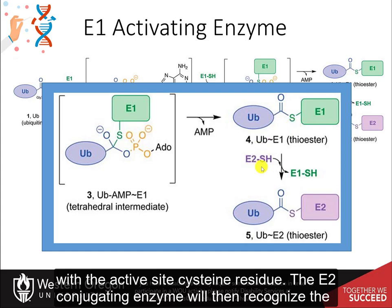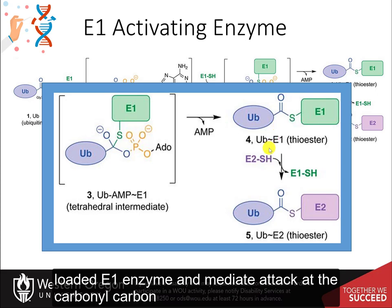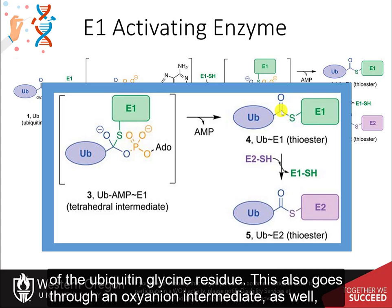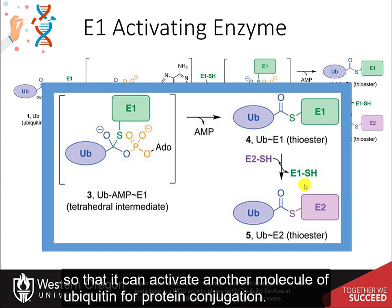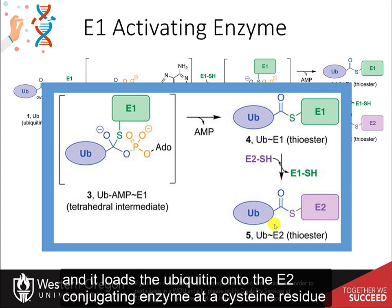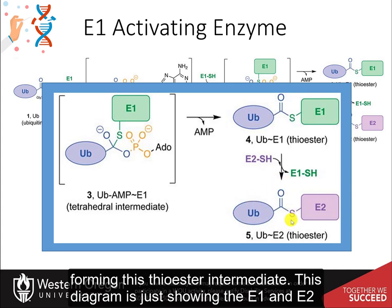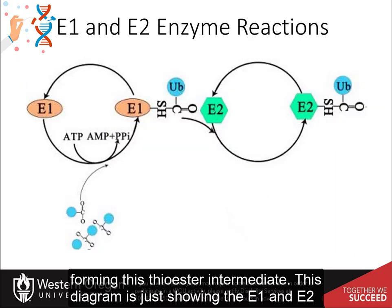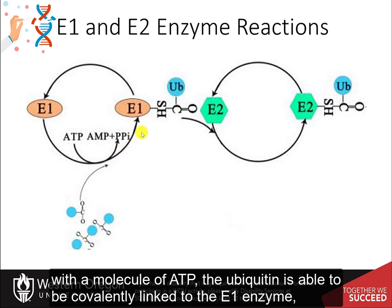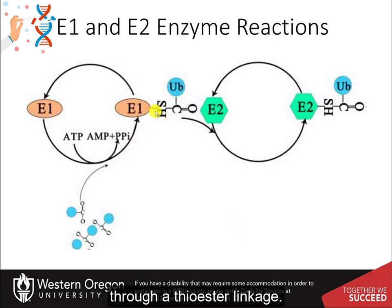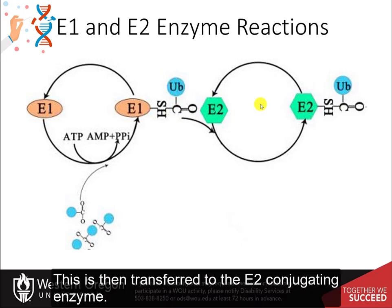The E2 conjugating enzyme will then recognize the loaded E1 enzyme and mediate attack at the carbonyl carbon of the ubiquitin glycine residue. This also goes through an oxyanion intermediate and results in the E1 enzyme serving as the leaving group, restoring the E1 enzyme so that it can activate another molecule of ubiquitin. This loads the ubiquitin onto the E2 conjugating enzyme at a cysteine residue, forming a thioester intermediate. Here, the pool of ubiquitins together with a molecule of ATP allows ubiquitin to be covalently linked to the E1 enzyme and then transferred to the E2 conjugating enzyme.